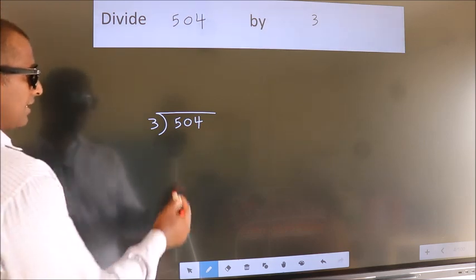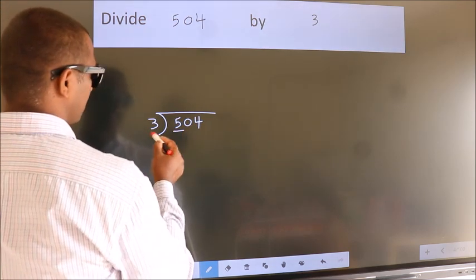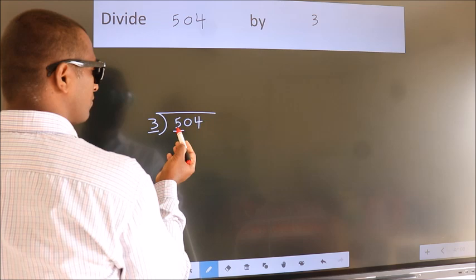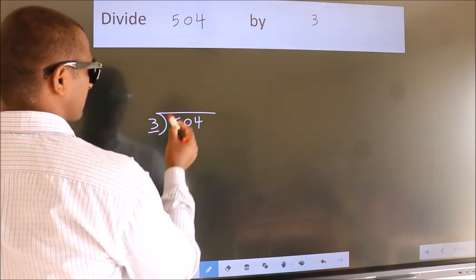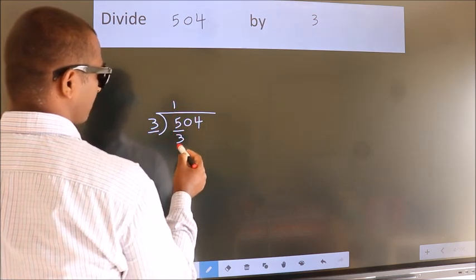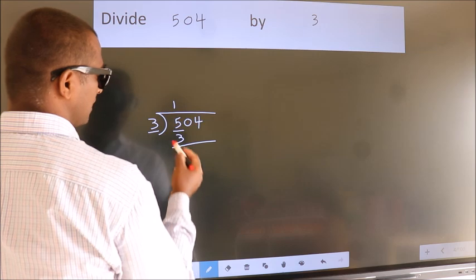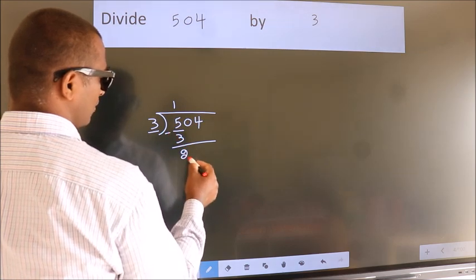Next. Here we have 5, here 3. A number close to 5 in 3 table is 3 ones 3. Now, we should subtract. We get 2.